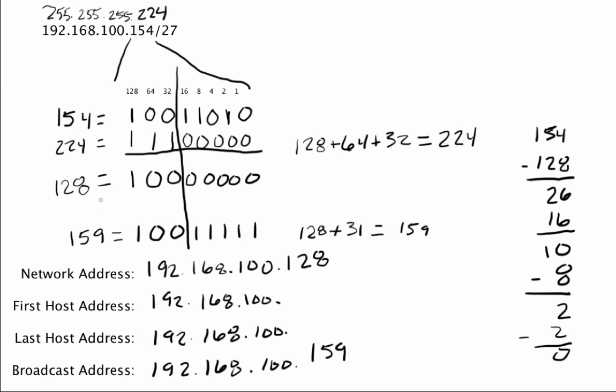That's how to take an address and a mask and figure out the first address, the last address, the subnet address, and the broadcast address. If you know how to do this, there is not an IP addressing problem that you will not be able to figure out how to do. Thank you.